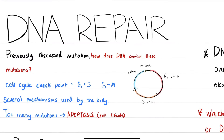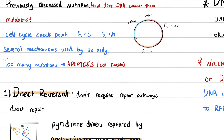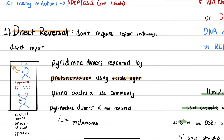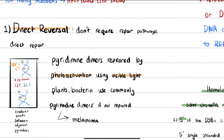We have direct reversal repair, which is when the mutation is directly fixed and doesn't require any kind of repair mechanism. An example of this is visible light and its impact on DNA. We know that UV light causes pyrimidine dimers to form — the UV light causes these nucleotides, or pyrimidines, to bond with each other.